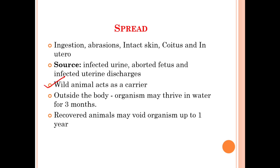Wild animals act as carriers for leptospirosis. The rat acts as the reservoir, while wild animals act as carriers. Outside the body, the organism may thrive in water for three months. Recovered animals may continue to shed leptospirosis causative agents in their discharges for up to one year.